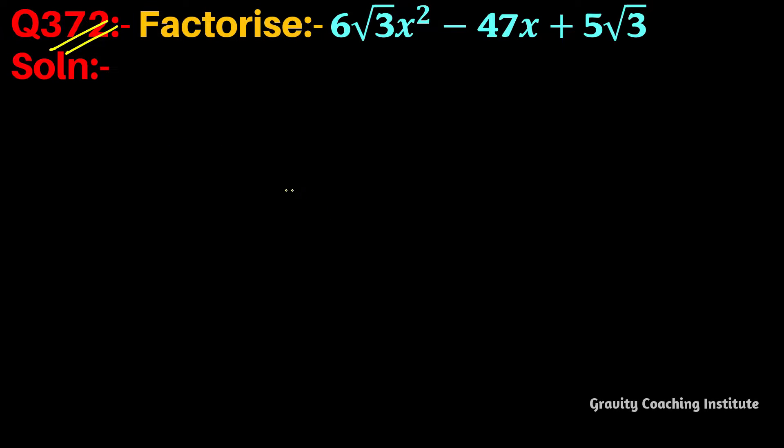Question number 372: Factorize 6√3x² - 47x + 5√3. So we will split the middle term. For x square...